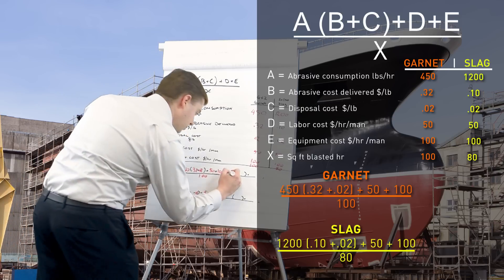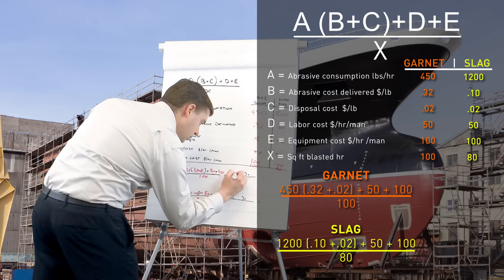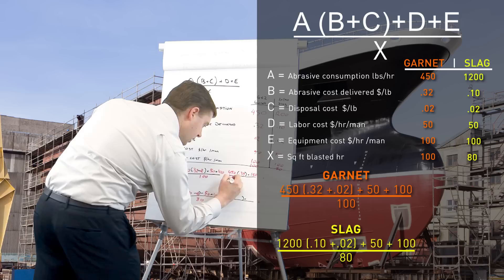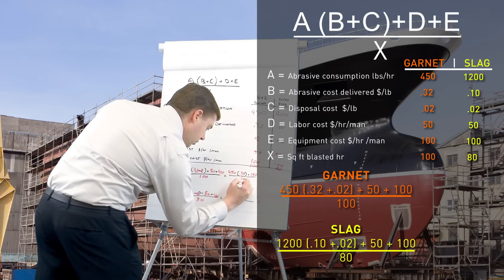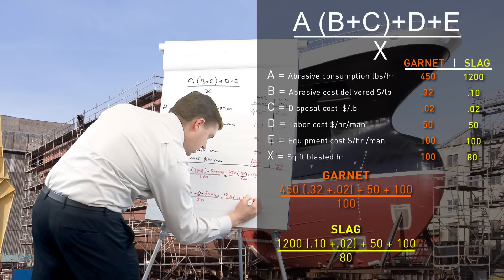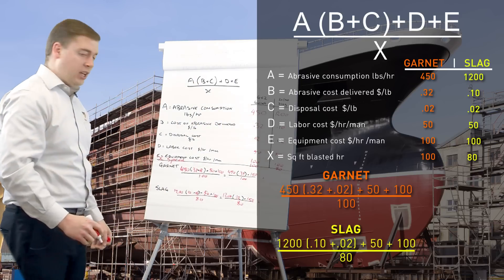So we've run these numbers in. We've got 450 times by 0.34 plus 150. Then over here we have 100 and then we had 1200, 0.12 plus 150 over 80. So we've run those numbers out.